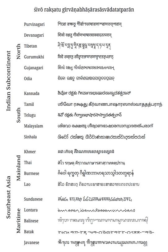Vowels are presented in their independent form on the left of each column, and in their corresponding dependent form combined with the consonant K on the right. A glyph for ka is an independent consonant letter itself without any vowel sign, where the vowel a is inherent.